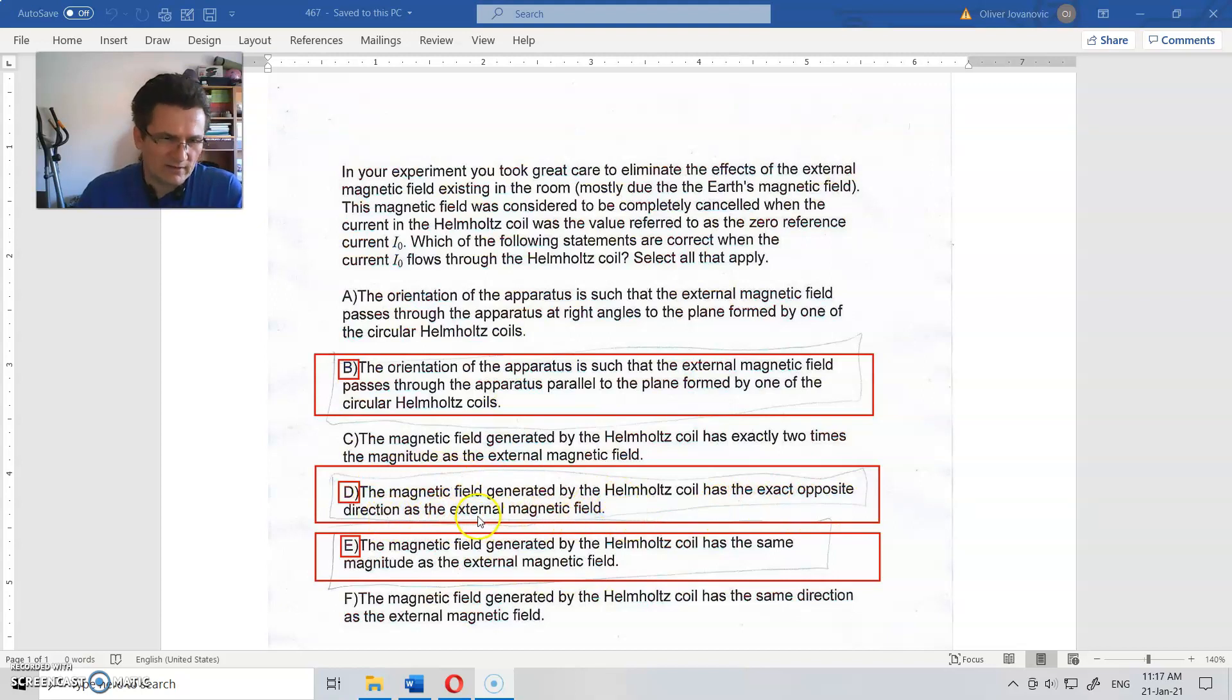And this is completely correct. It has to have opposite magnetic field in order to cancel the influence of that original magnetic field. The magnetic field generated by the Helmholtz coil has the same magnitude, and that is also correct. With smaller or larger magnitude, that thing will move to the left or to the right.